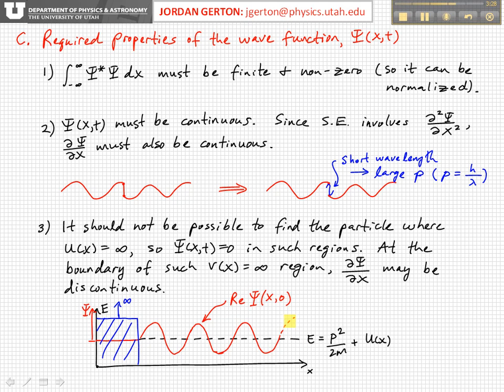So in this case, we have our sinusoidally varying wave function in this region. And then the wave function must have identically zero amplitude in this region because it's classically forbidden. Again, this is an infinitely high potential.